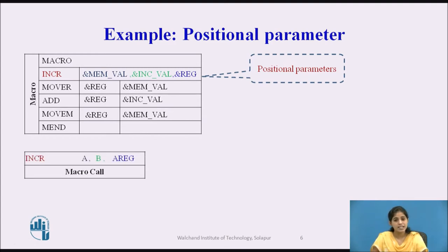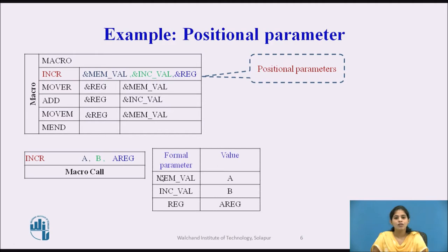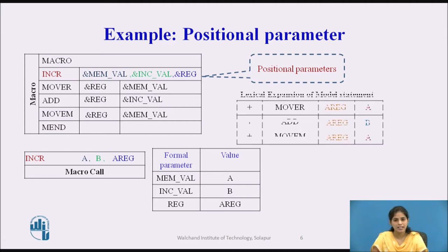This is the macro call. The name of the macro is INCR, with three actual values: A, B, and A_REGISTER. The first formal parameter MEMORY_VAL has the actual value A, INC_VAL has the value B, and REGISTER has the value A_REGISTER.